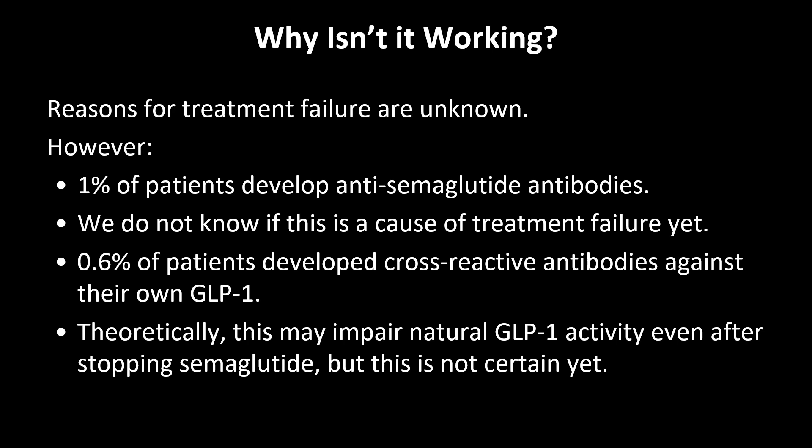There's one theoretical reason for treatment failure that I want to discuss — please keep in mind this is theoretical and not proven. About 1% of patients develop antibodies to semaglutide, meaning their body is reacting to it as a foreign substance. Although these patients may not have a true allergy to the drug, the question is whether these antibodies are preventing the drug from actually working — since coating the drug with antibody would prevent binding to the GLP-1 receptor. Interestingly, 0.6% of total patients on semaglutide also developed antibodies that bound to their natural GLP-1, raising concern about whether these patients will then have poor natural GLP-1 function and poor glucose tolerance as a consequence. Again, this is just theoretical at this point.